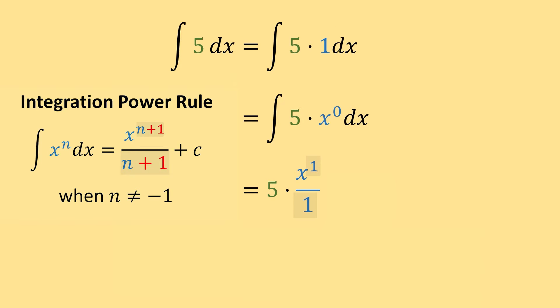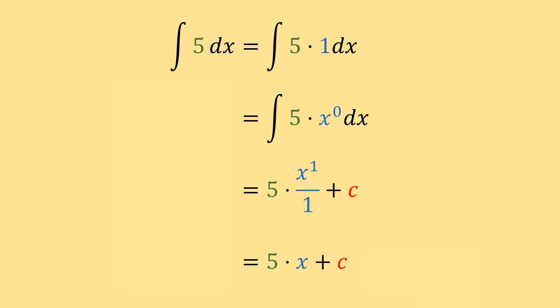So, we're going to divide by 1. And since we have no bounds, we're also going to add c, our constant of integration. And since x to the 1 over 1 is x, we can just get 5 times x plus c, which will be equal 5x plus c.